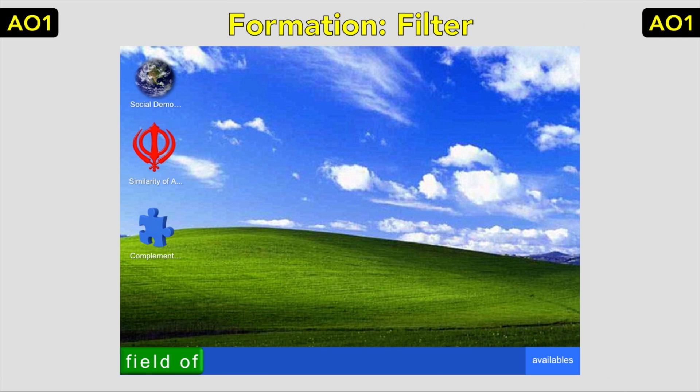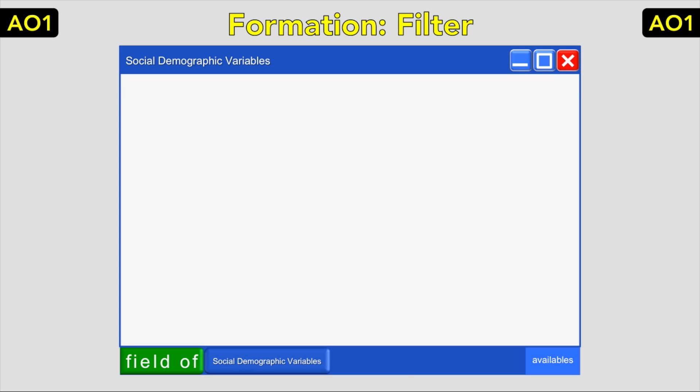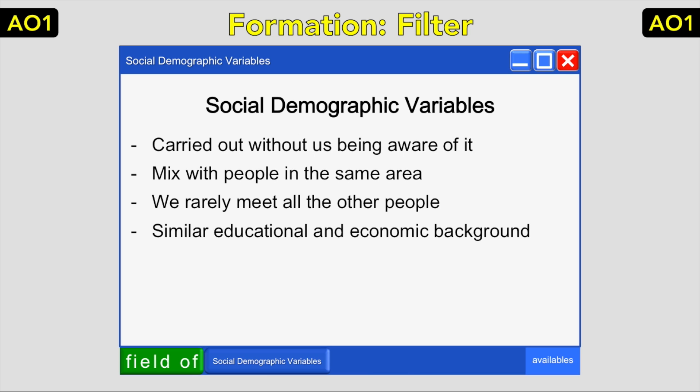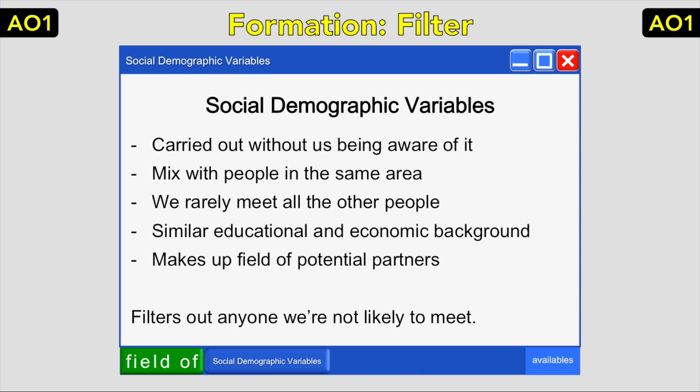The next part of formation is the filter theory. This states that we have a 'field of availables' — all the possible people we could have a relationship with. The theory says we filter out potential partners for different reasons at different times, narrowing the field of availables down to a relatively small 'field of desirables'. There are three filters. The first is social demographic variables, usually carried out without us being aware. Most people tend to mix with those who live in the same area or go to college or work together — a small selection, often similar in educational and economic background and social class.